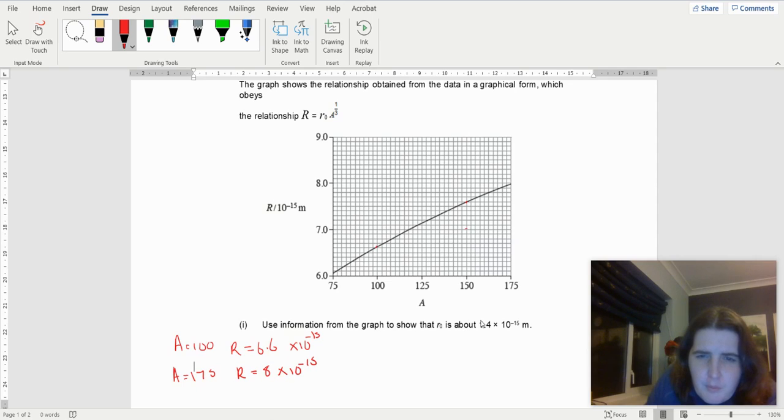1, 2, 3, sorry, 7.6. So when A equals 150, R equals 7.6 × 10⁻¹⁵.